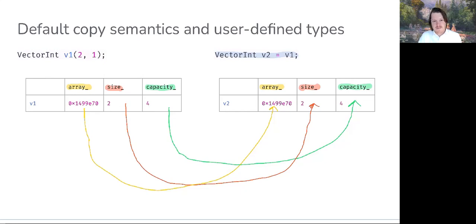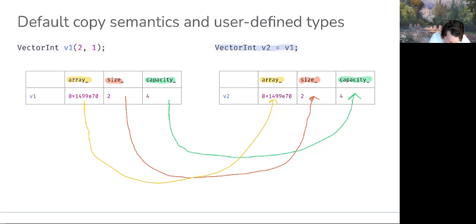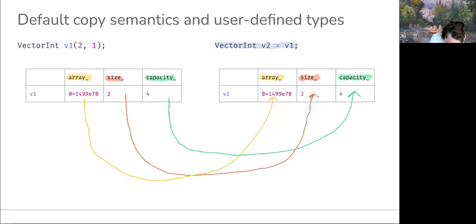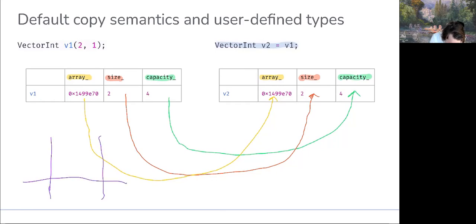v1 might look like this - it's a named object, so some portion of it will be on the stack, and it also owns an object allocated on the free store. Let's say v1 has a pointer, 2, and 4. That pointer points to an array on the free store with capacity 4. Let's draw it as such.